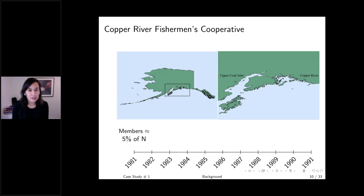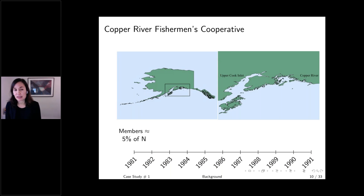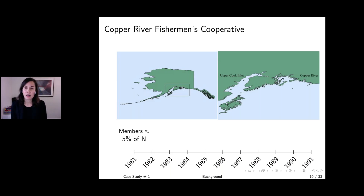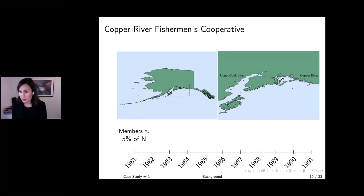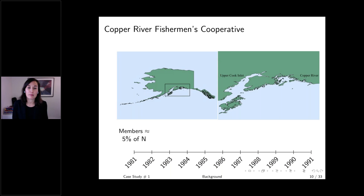The story starts in 1980, when there was a historically large salmon run in Bristol Bay — Alaska's largest salmon fishery — which depressed ex-vessel prices throughout the state, particularly in the Upper Cook Inlet and Copper River fisheries. Harvesters in both fisheries went on strike. In the Upper Cook Inlet processors settled and raised prices, but in the Copper River the outcome was different, so a group of harvesters decided to bypass processors completely.